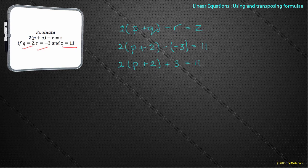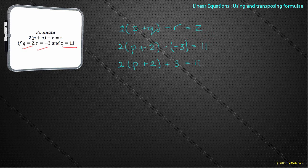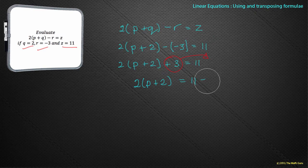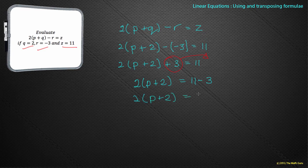Now let's go back to the analogy of the prison guard, the prison with prisoners inside, and the creepy old lady watching. The first thing we've got to do is get rid of this creepy old lady, because the prisoners can't escape by kissing the prison guard if she's watching. So the plus 3 moves to the other side and becomes a minus 3. That leaves 2(p + 2) = 11 - 3, so 2(p + 2) = 8.